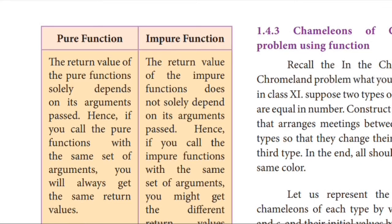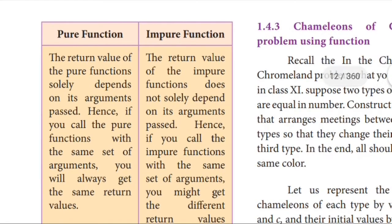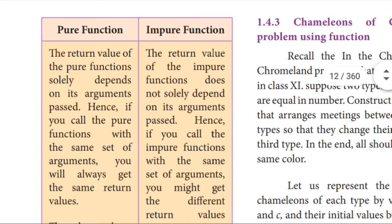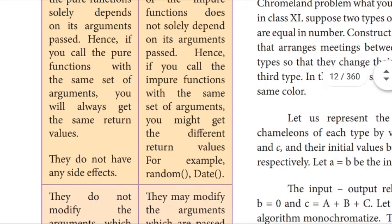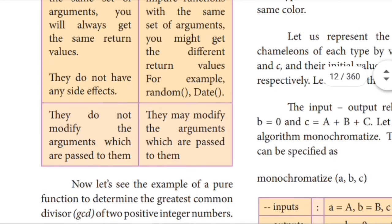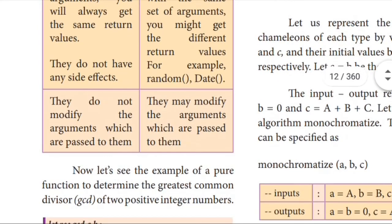But in impure function there will be distraction. The return value of the impure function does not solely depend on its arguments. Pure and impure are completely different. In a pure function, they do not modify the arguments which are passed to them — direct input, direct output. But in an impure function, the function may modify the arguments which are passed to them.